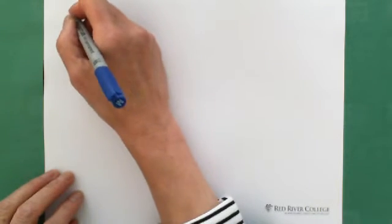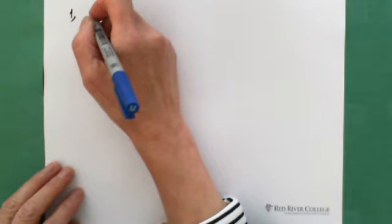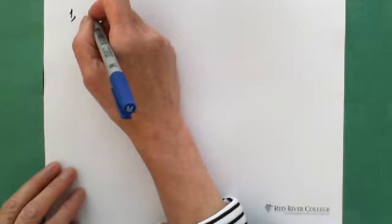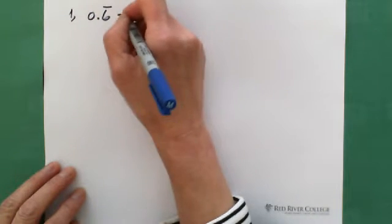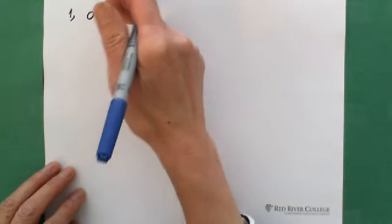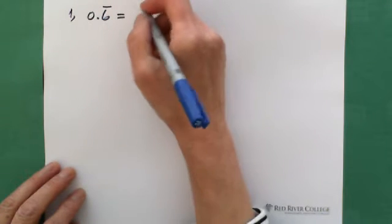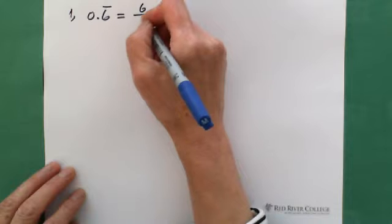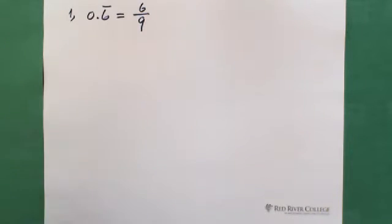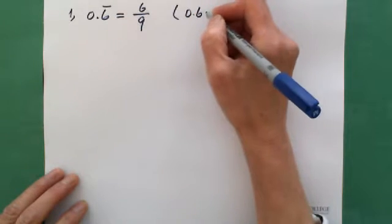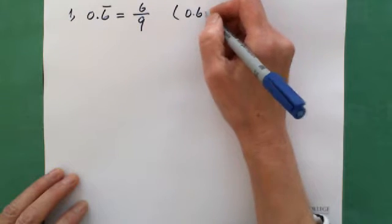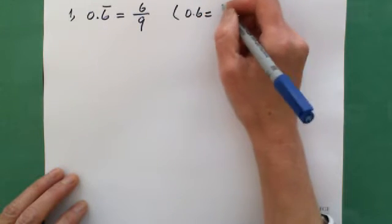So let's say you have a question to convert a repeating decimal. If you're given 0.6 repeating, what fraction is this? Because it's a one-digit repeating decimal, this is 6 over 9. If you forgot, just compare: 0.6 as a terminating decimal is 6 tenths, which is 6 over 10.